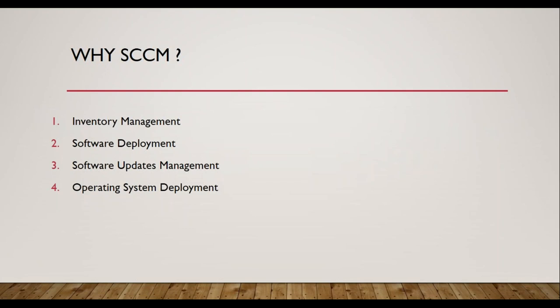Once you have the task sequence ready — it's just an XML file — every time you have a new machine to build, if someone says we have 10 new users joining and we want you to build these 10 machines, all you need to do is connect all 10 machines to the network and run this task sequence with one single click. Automatically these 10 machines will start building and get their respective drivers, core applications, and optional applications. This kind of automation is possible through SCCM — your job is just to make sure the machines are connected online and run the task sequence. After one hour, the machines are ready.